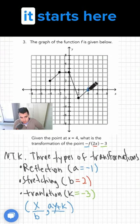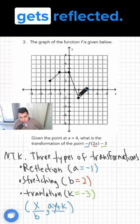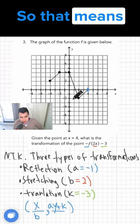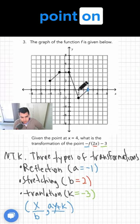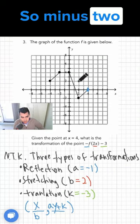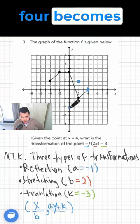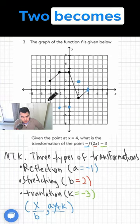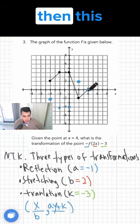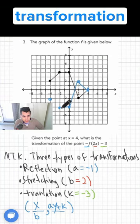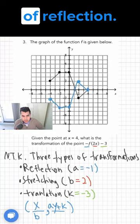So when x equals 4, it starts here, and then it gets reflected. So that means the opposite point on the y-axis. So -2 becomes 2, 4 becomes -4, 2 becomes -2. Then this will be the transformation as a result of reflection.